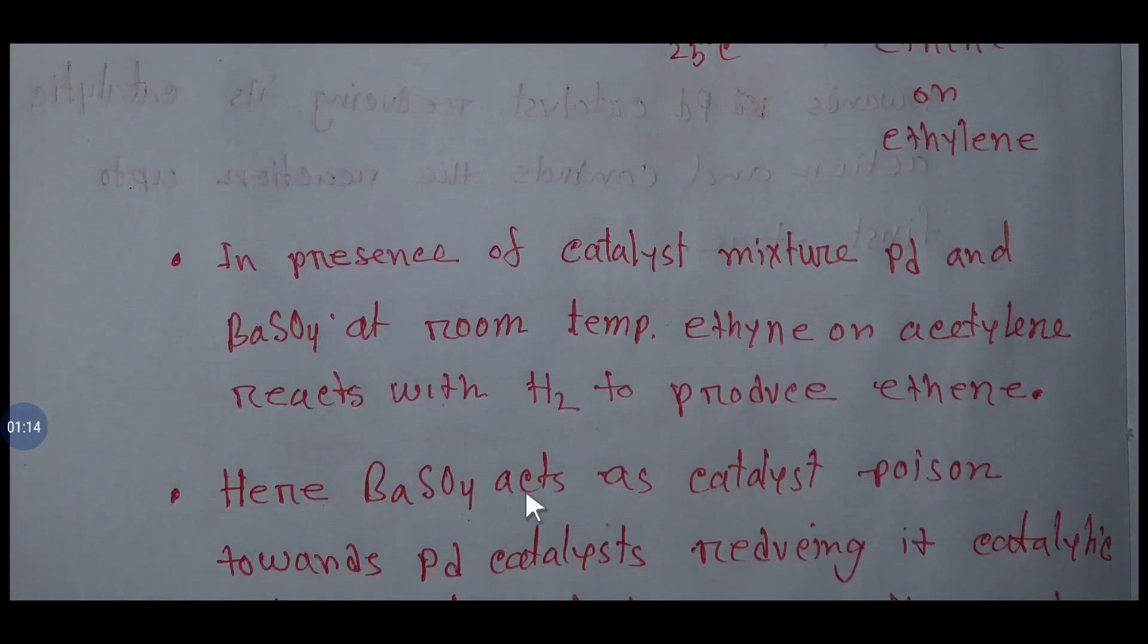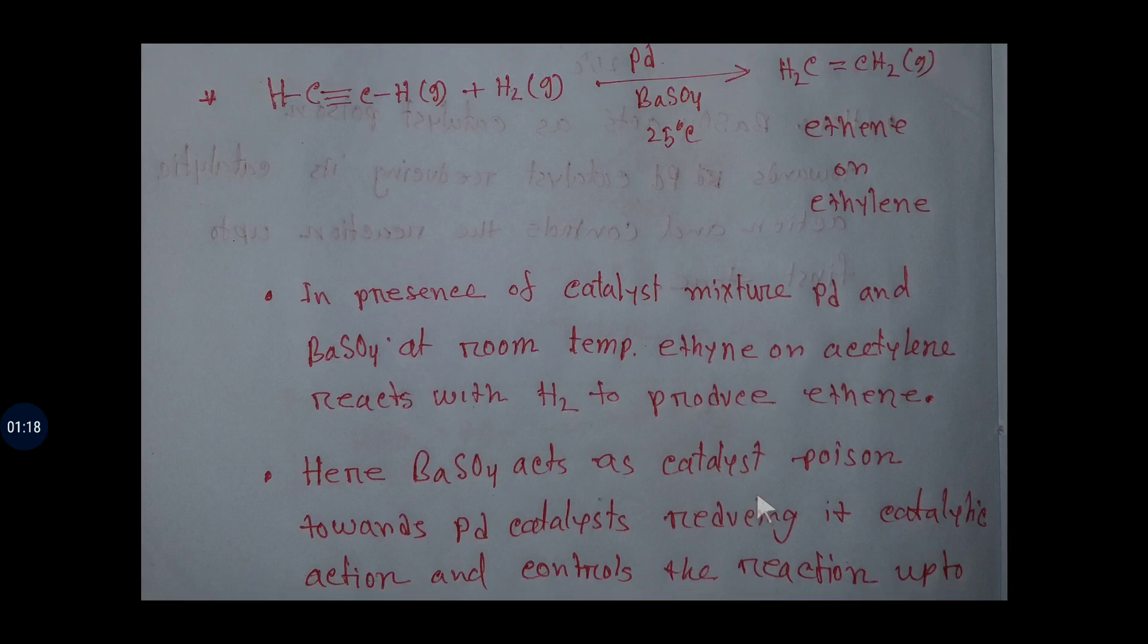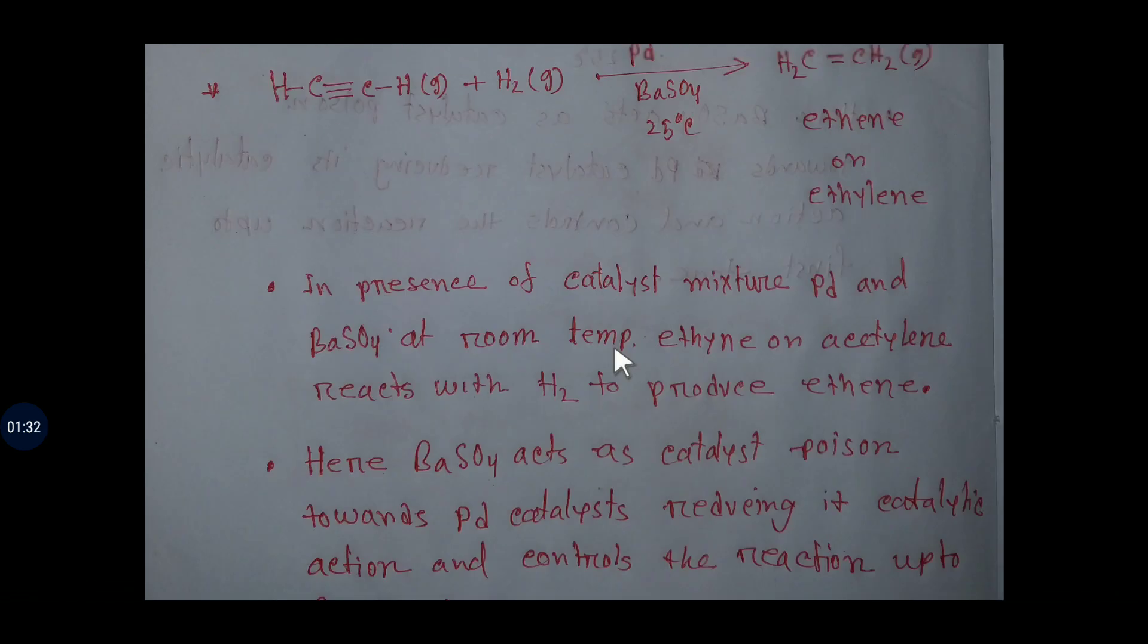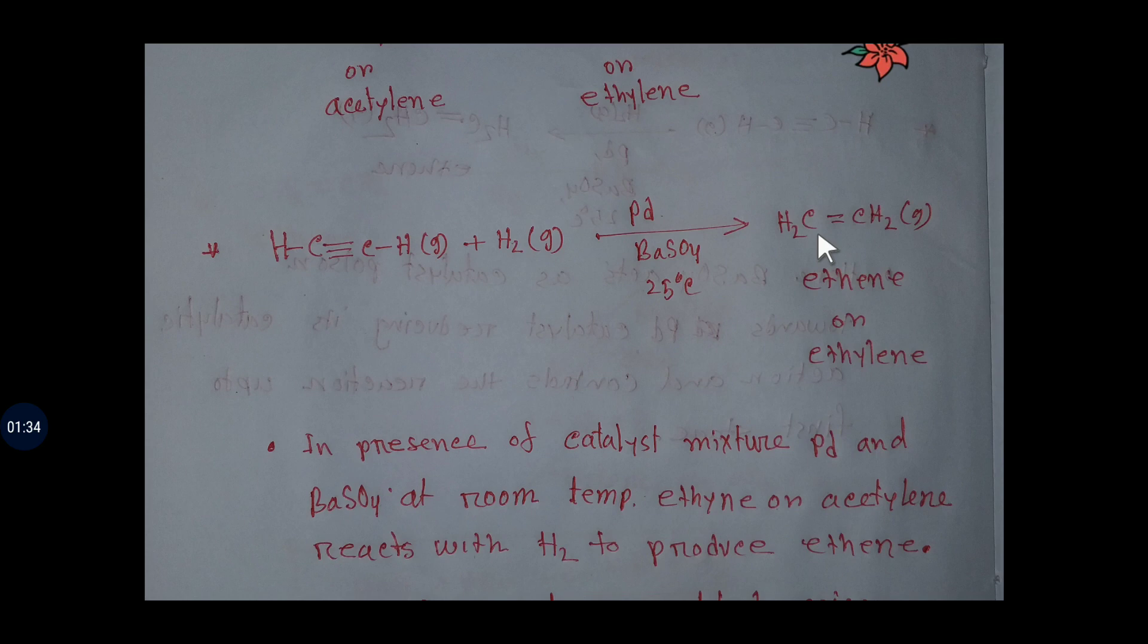Here barium sulfate acts as catalyst poison towards palladium catalyst, reducing its catalytic action and controls the reaction up to first stage. That is, we don't get ethane, we get ethene.